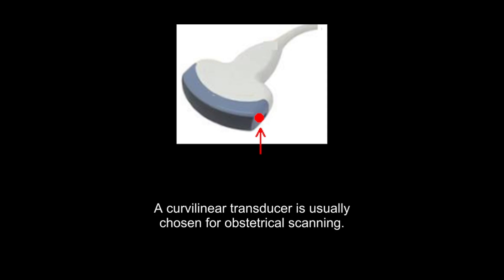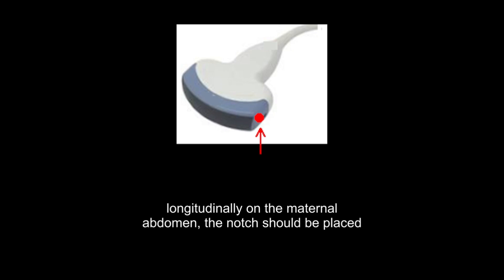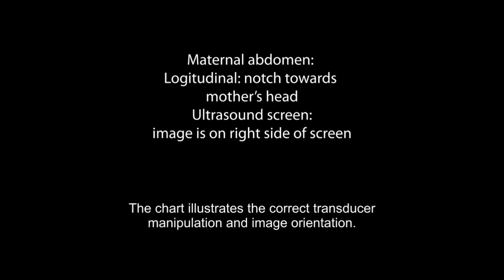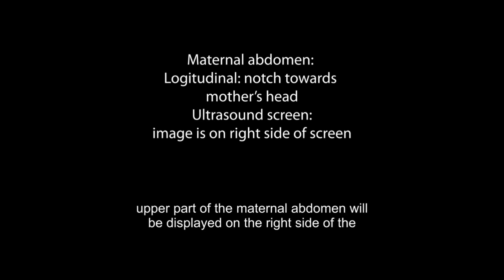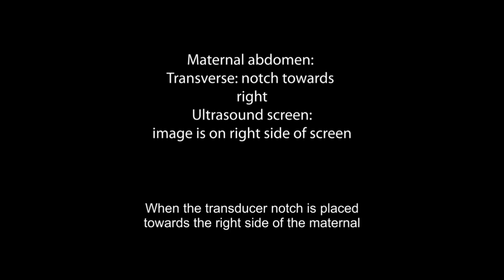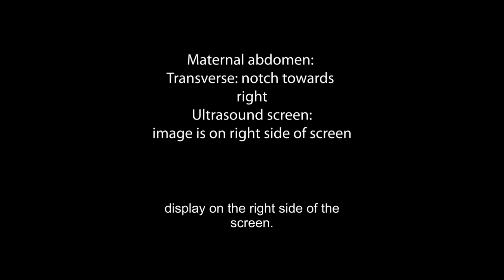A curvilinear transducer is usually chosen for obstetrical scanning. When scanning longitudinally on the maternal abdomen, the notch should be placed towards the mother's head. This chart illustrates correct transducer manipulation and image orientation. When the transducer notch is towards the mother's head, ultrasound images of the upper part of the maternal abdomen will be displayed on the right side of the ultrasound screen. When the transducer notch is placed towards the right side of the maternal abdomen, ultrasound images located to the right of the maternal abdomen will display on the right side of the screen.